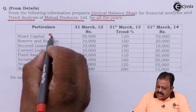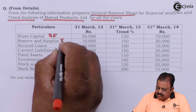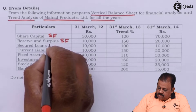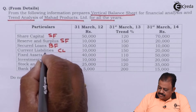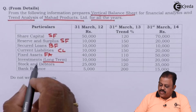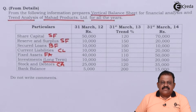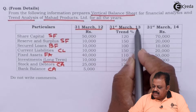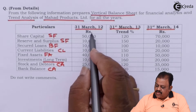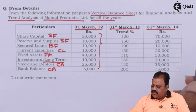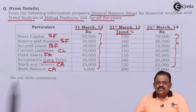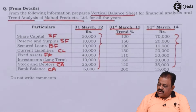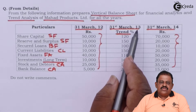The balance sheet items include share capital and reserves and surplus, both part of shareholders' fund; secured loan as borrowed fund; current liabilities; fixed assets; long-term investments shown under a separate heading; stock and debtors as current assets; and bank balance. For 31st March 2012 and 2014, actual amounts are given, but for 2013, only trend percentages are given.